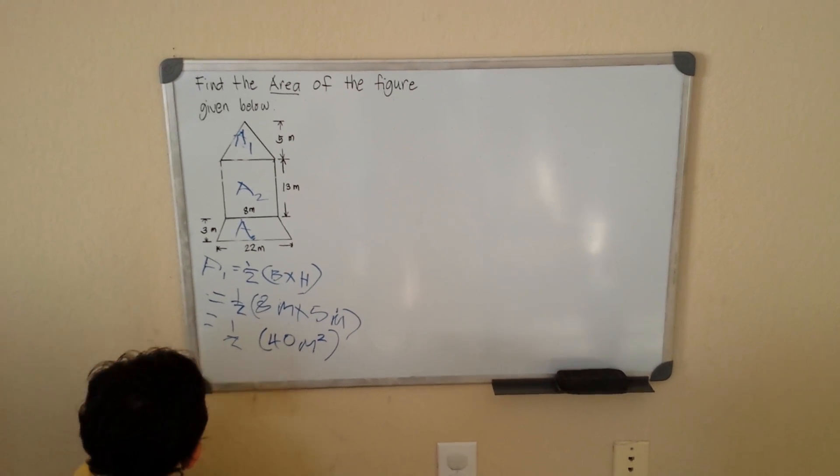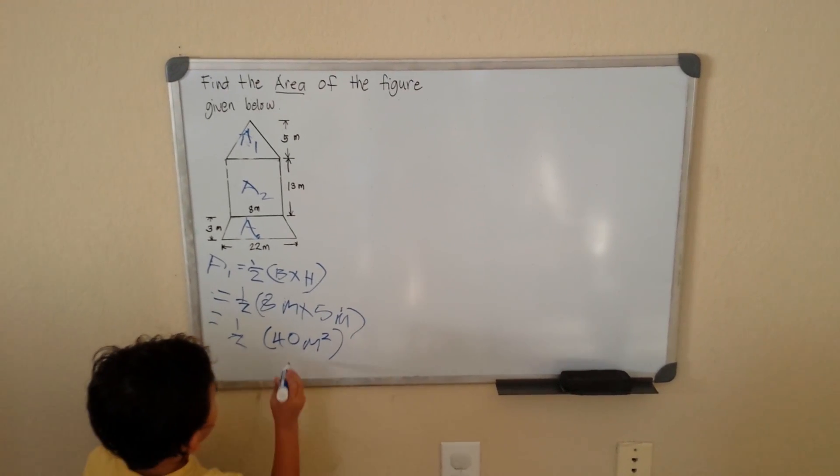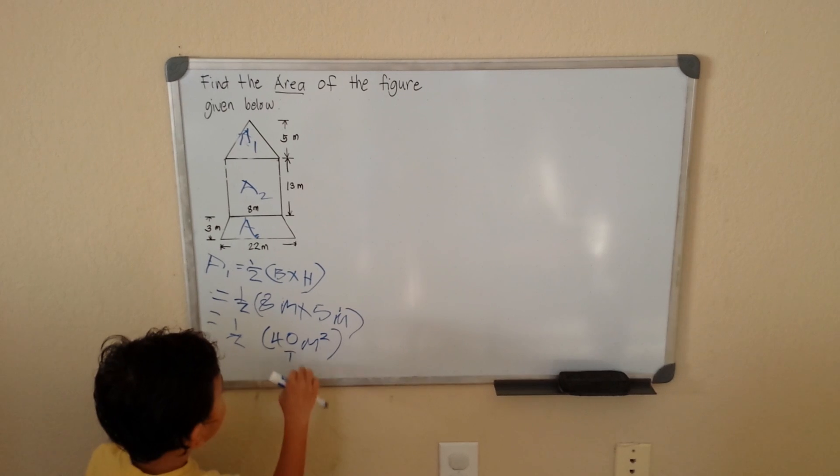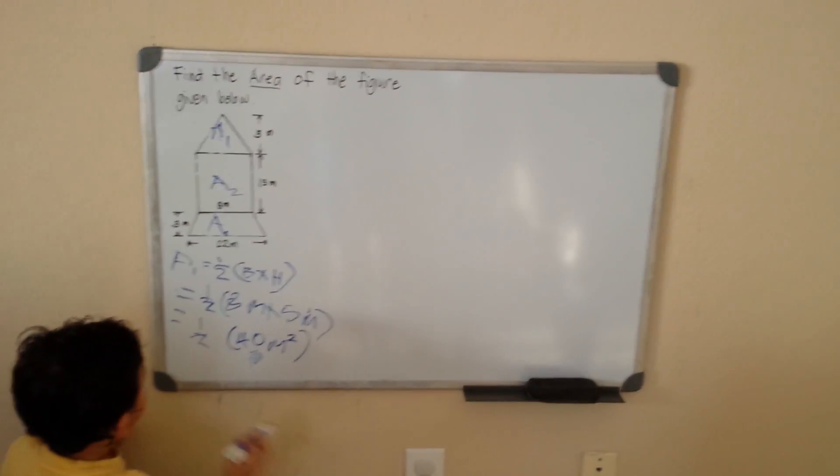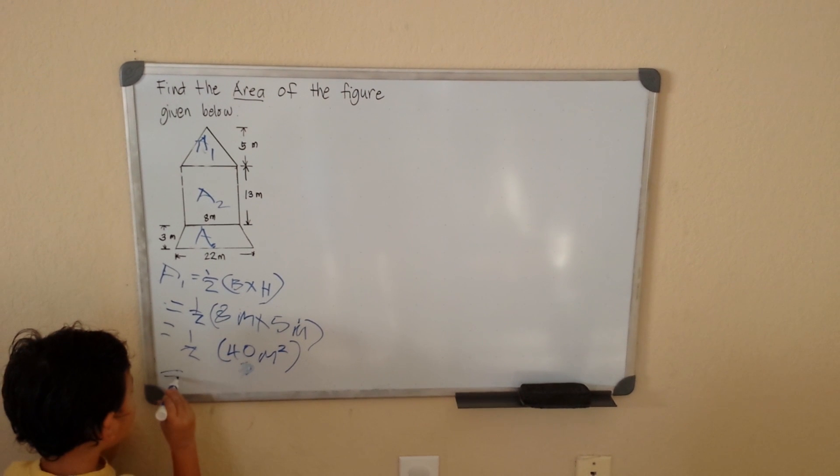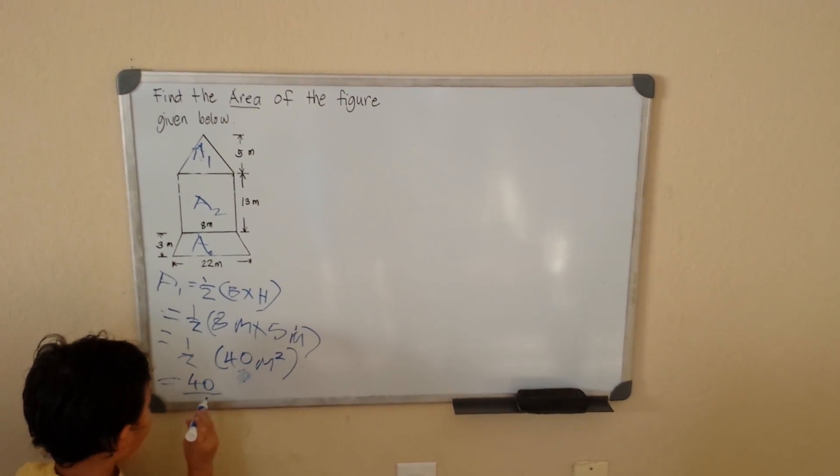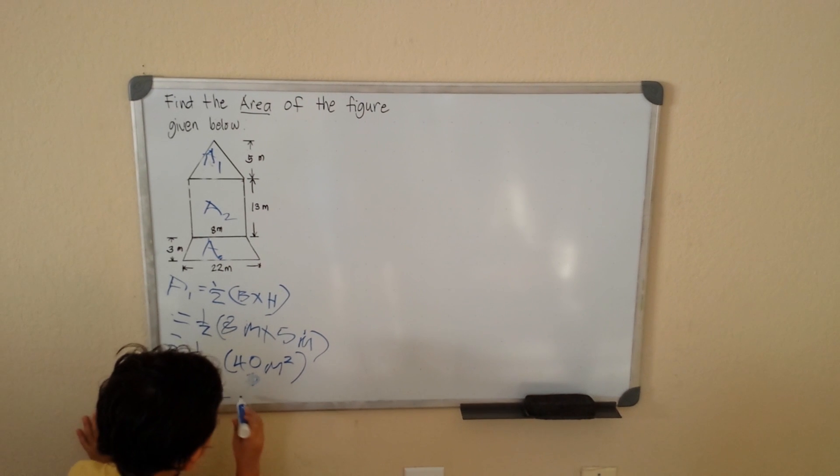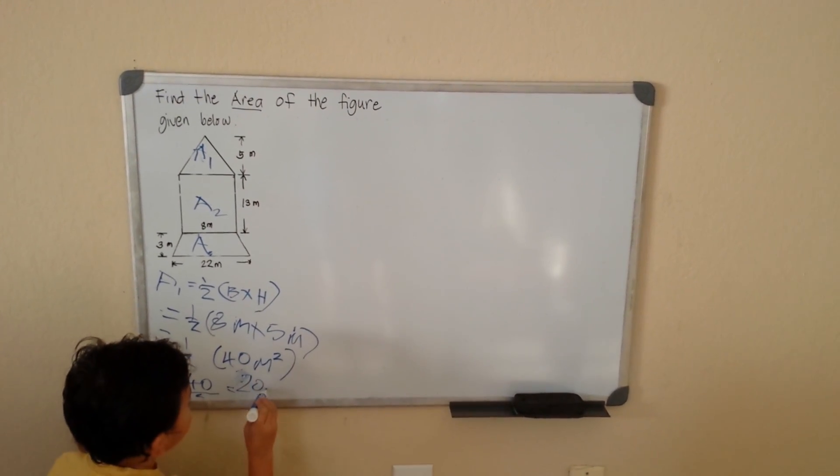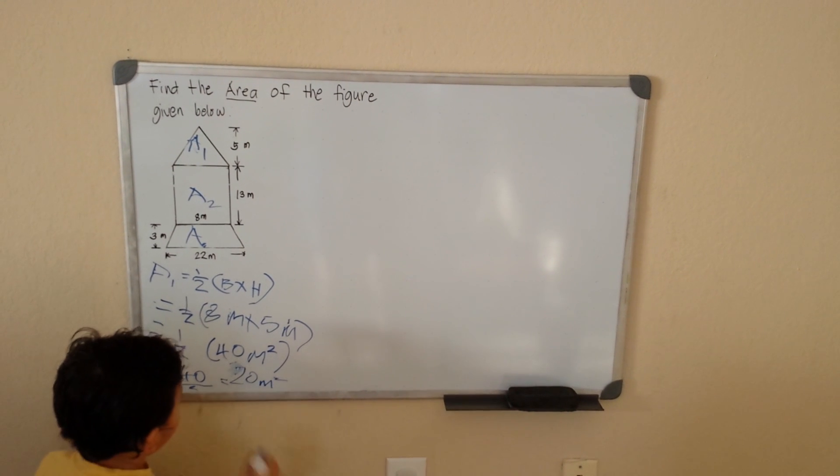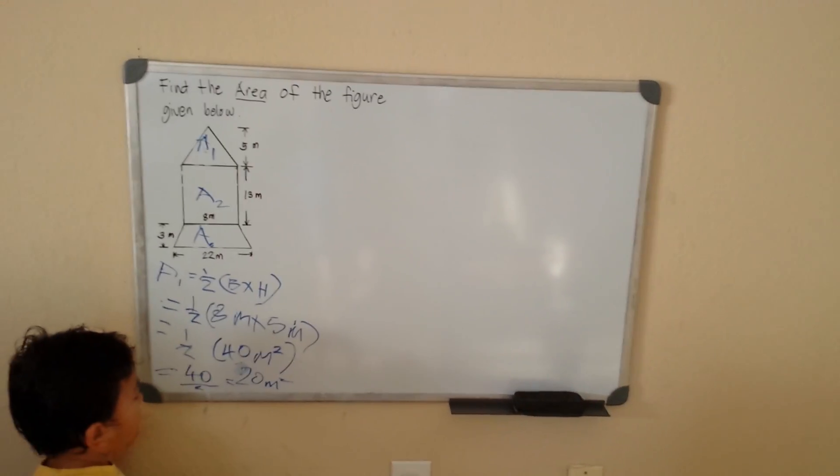So what am I going to do this time? 1 times 40 equals 40 divided by 2 equals 20. So 20 meters squared.